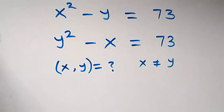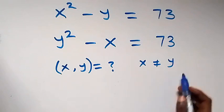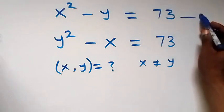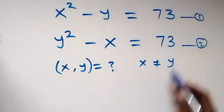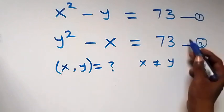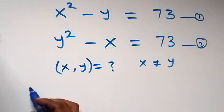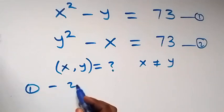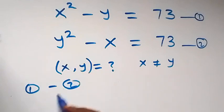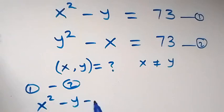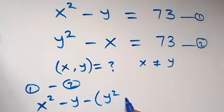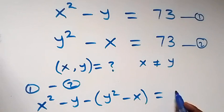Hello, you're welcome. How to solve for x and y in these systems of equations where x is not equal to y. Label this as equation one and this as equation two, then we subtract equation two from equation one. On the left-hand side of equation one we have x squared minus y, then minus equation two, that's y squared minus x, and on the right-hand side 73 minus 73 gives us zero.